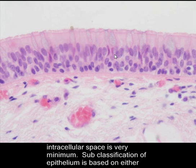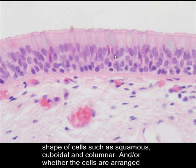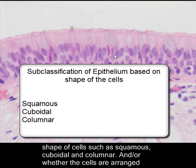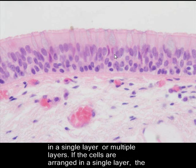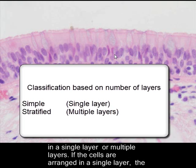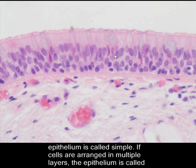Subclassification of epithelium is based on either the shape of the cells — such as squamous, cuboidal, or columnar — and whether the cells are arranged in a single layer or multiple layers. If the cells are arranged in a single layer, the epithelium is called simple. If the cells are arranged in multiple layers, the epithelium is called stratified.